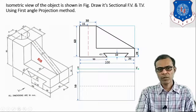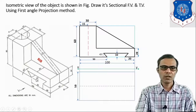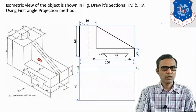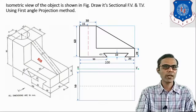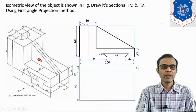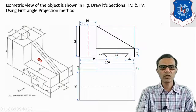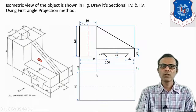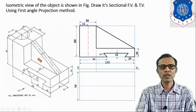The dovetail-shaped slot which is cut at the bottom side of the base plate is not visible from the top view direction, so it will become a hidden detail. Draw the projection — the length here is 40 mm from this point. By projection we get that length of 30 mm.